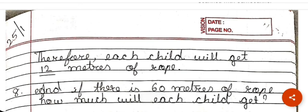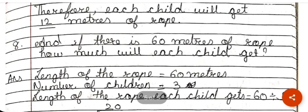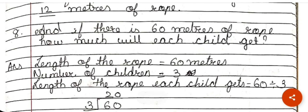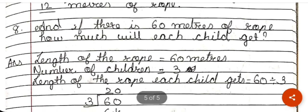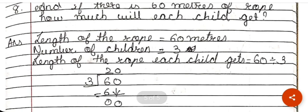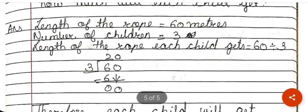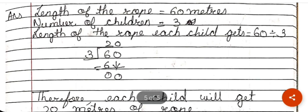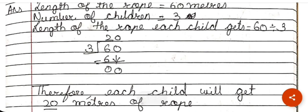Now if there were 36 meters of rope divided among 3 children, one child would get 12 meters. And if it is 60 meters of rope with 3 children, then length of rope is 60 meters, number of children is 3, so 60 divided by 3: 3×2=6, 6 minus 6 is 0, bring down the 0, which cannot be divided, so the answer is 20. If the rope is 60 meters, each child gets 20 meters.